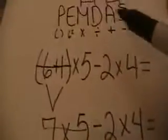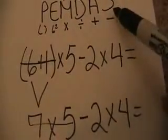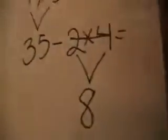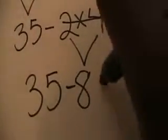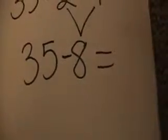Now I have a minus sign and a multiplication sign. Looking at PEMDAS, we work the multiplication before the subtraction. So I take two times four and solve it: two times four is eight. I scratch that part out and bring the rest of the problem down: thirty-five minus eight. Since subtraction is the last part of the problem, I go ahead and subtract. Thirty-five minus eight is twenty-seven.